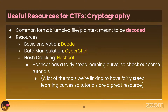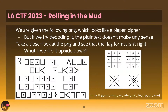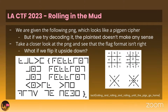Next I'll talk about Cryptography. A common format is jumbled files such as plain text that must be decoded to get the flag. Good resources include dcode.fr for basic encryption, CyberChef for data manipulation, and Hashcat for hash cracking. Some of these have a steep learning curve, so check out tutorials. A challenge from last year called 'Rolling in the Mud' gives you a PNG that looks like a pigpen cipher. Decoding it initially gives nonsensical plain text, but noticing the flag format should start with 'LACTF{', flipping the image upside down gives the correct orientation, and then decoding it yields the flag.